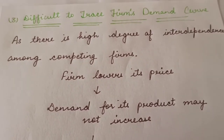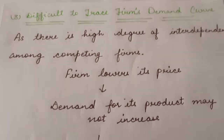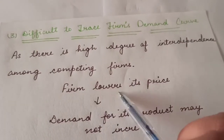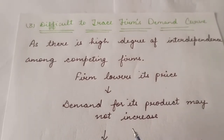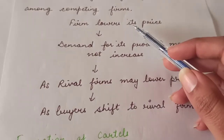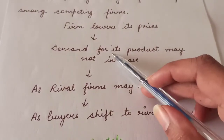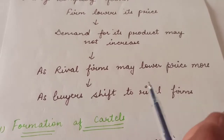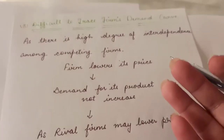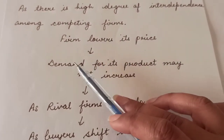The next feature is that it is very difficult to trace a firm's demand curve in such a market. As there is a high degree of interdependence among competing firms, suppose one firm lowers its price, then its demand for the product may not increase. Why? Because the rival firm may lower the price even more. One firm lowers its price, the rival firm lowers it further, and consumers shift to the rival firm. So we cannot depict what the firm's demand curve will be under oligopoly due to high interdependence among competing firms.